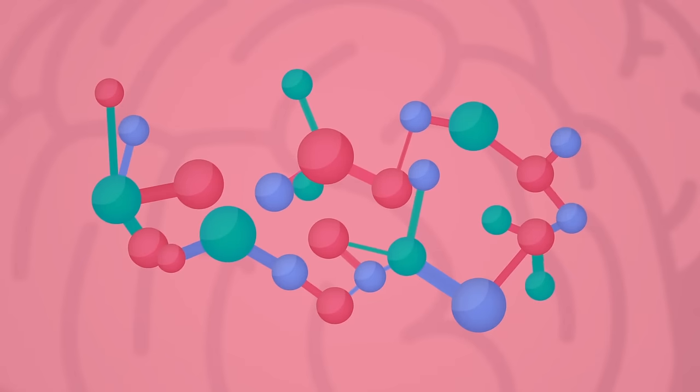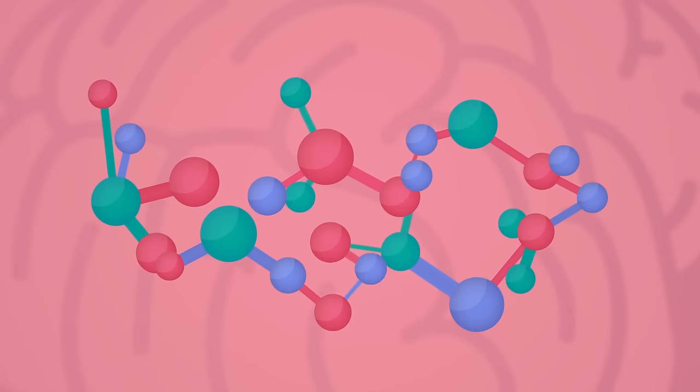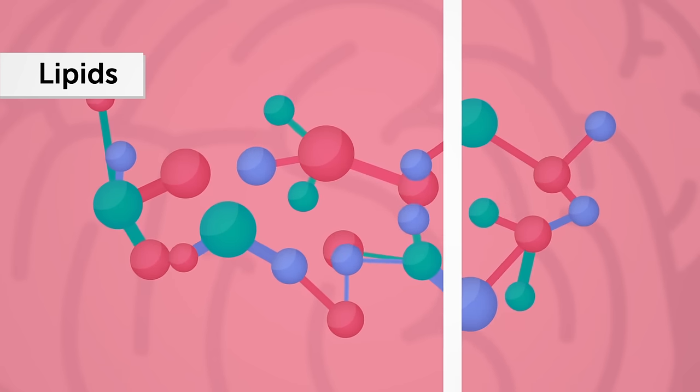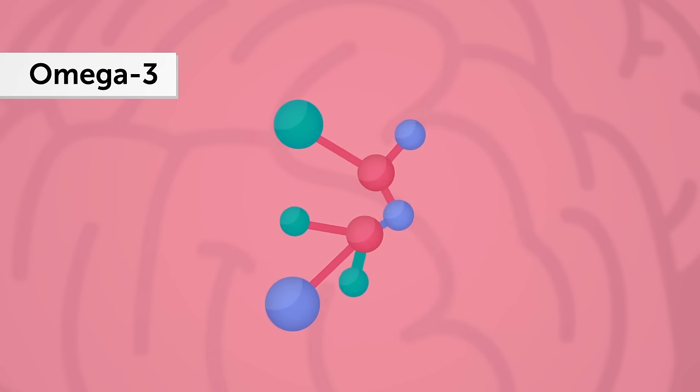This incredible organ is mostly made of fats that we call lipids. Around a third of these lipids are made up of brain essential omega-3 fatty acids.